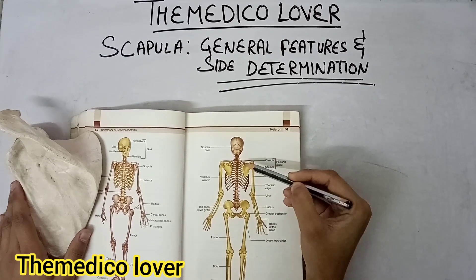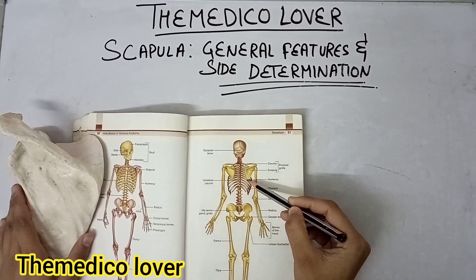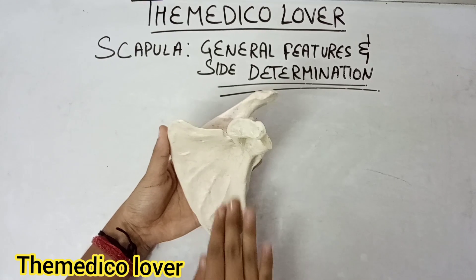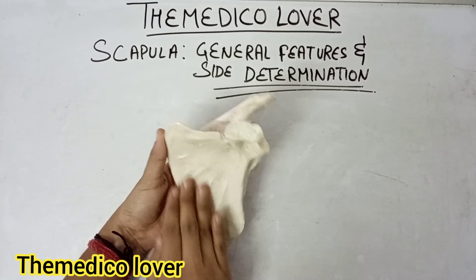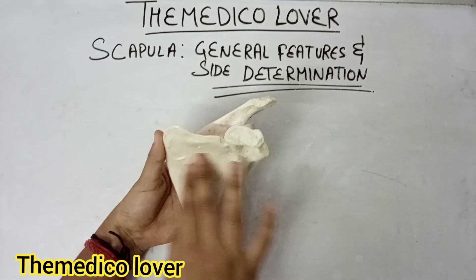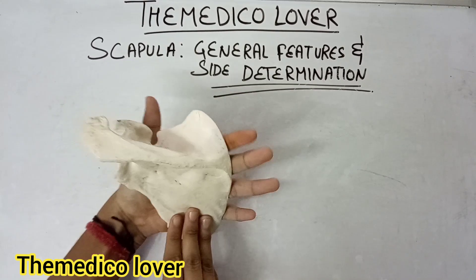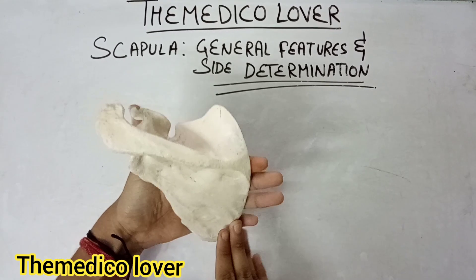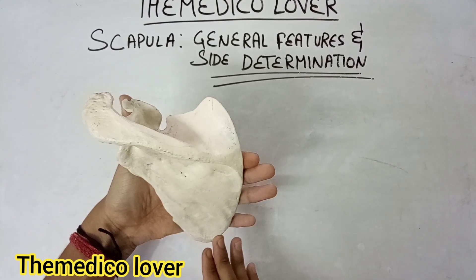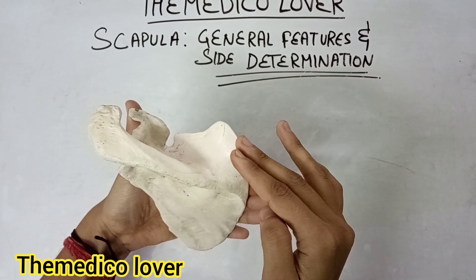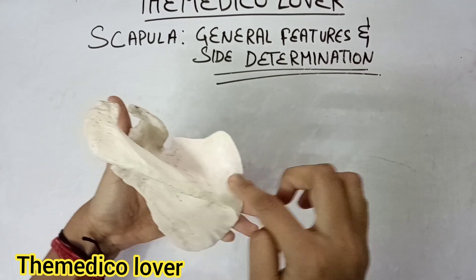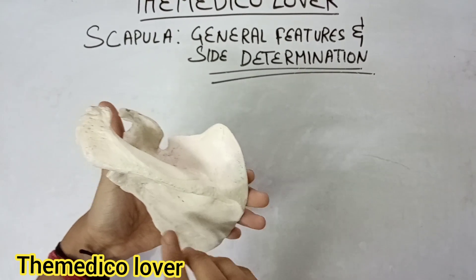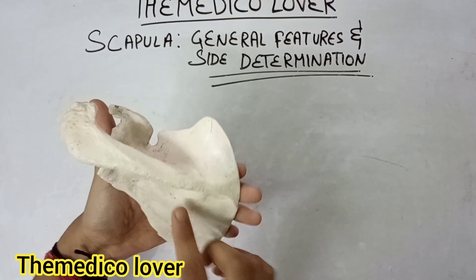It extends from the second vertebra to the seventh vertebra. The costal surface is present anteriorly and is concave in nature. The posterior surface is convex, and it is divided into two parts: the supra-spinous, which is smaller, and the infra-spinous.